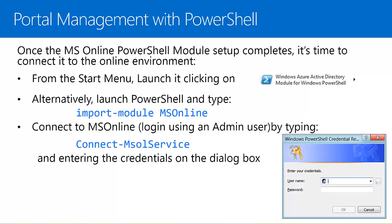Once the Windows Azure Active Directory module is installed, we are ready to launch PowerShell, connect to Office 365, and start managing portal features. We have two options to launch PowerShell: click the Windows Azure Active Directory module icon from the Start menu, or launch PowerShell directly and import the MSOnline module by typing 'import-module MSOnline'. Then connect to Microsoft Online Service by typing 'connect-MSOLService' and entering administrator credentials when prompted.